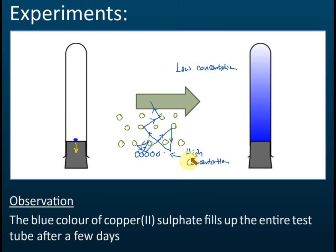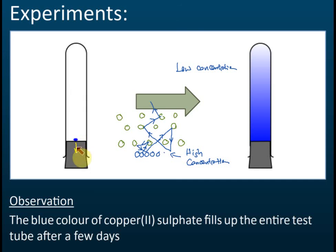The particles move from high concentration to low concentration. At the area where the copper sulfate crystal is, the concentration is high; at the area above it, the concentration is low. The particles move from high concentration to low concentration, even though this is against gravity. According to gravity it should go down, but it goes up because the concentration here is high and the concentration up there is low.